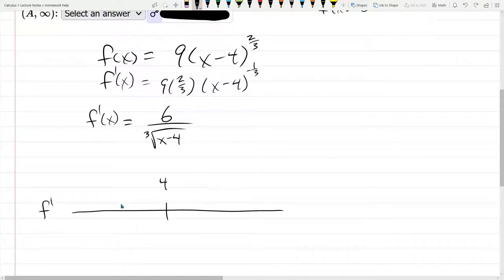So let's go ahead and plug in 0, I think 0 is a good value to plug in. And I'm going to plug in 5. That gives me an easy root. So f prime of 0, 6 over the cube root of 0 minus 4.